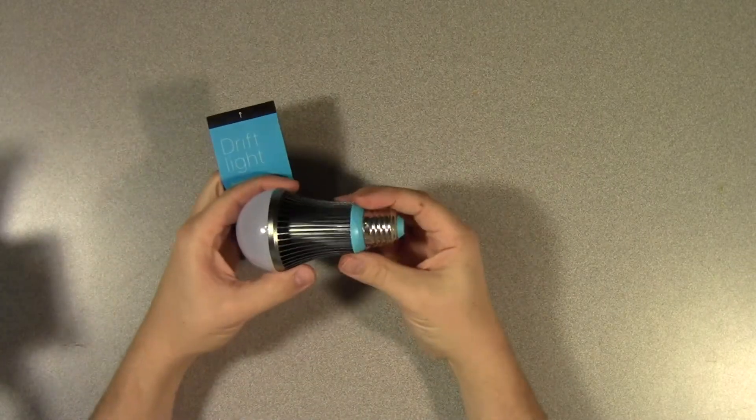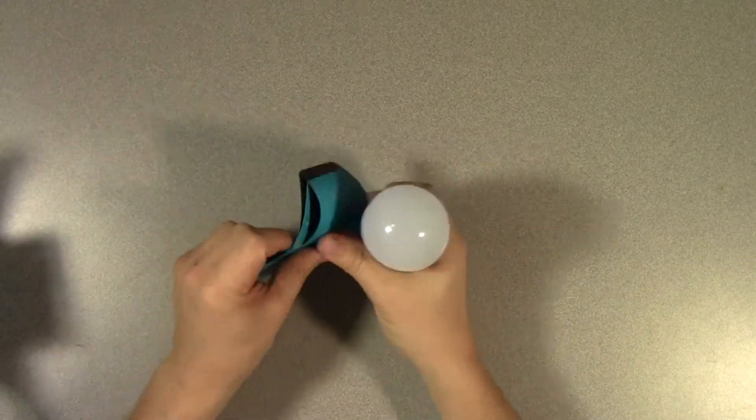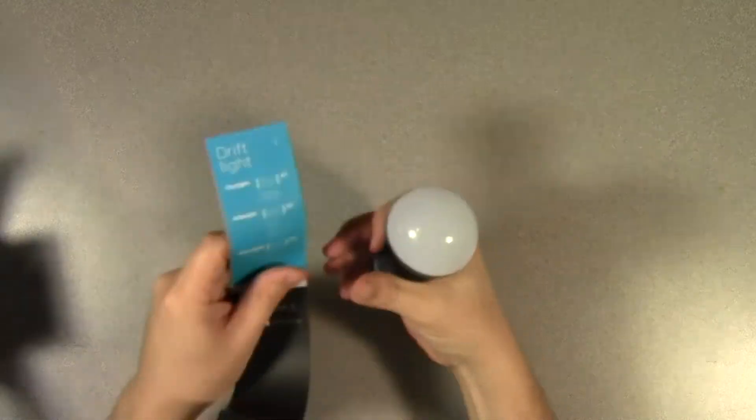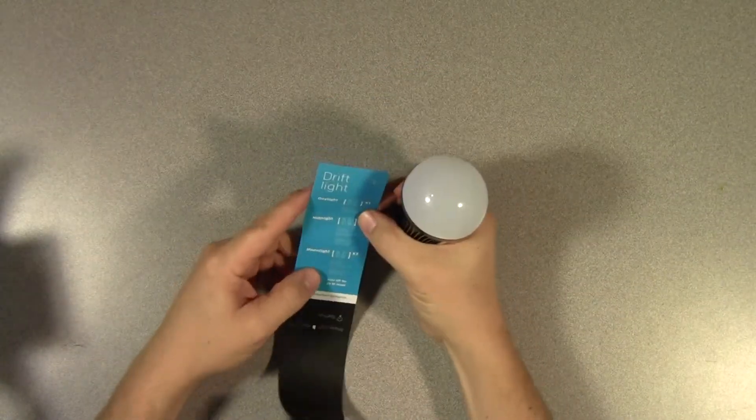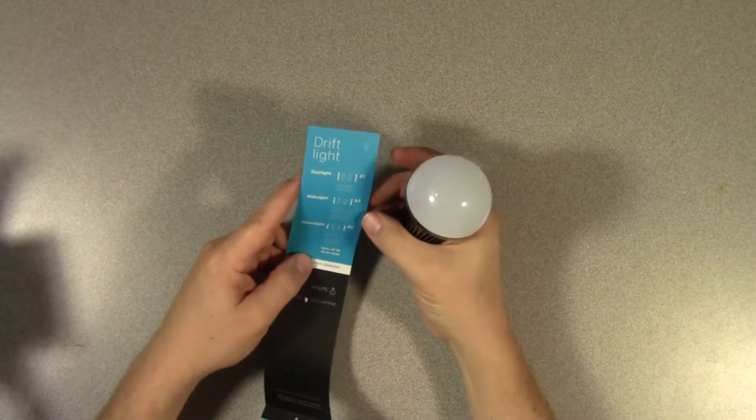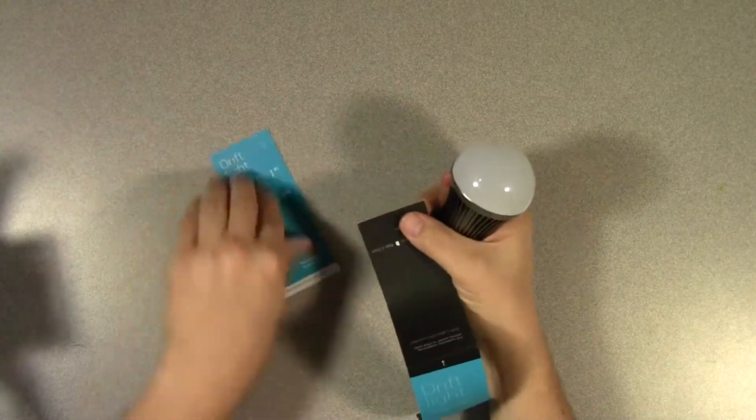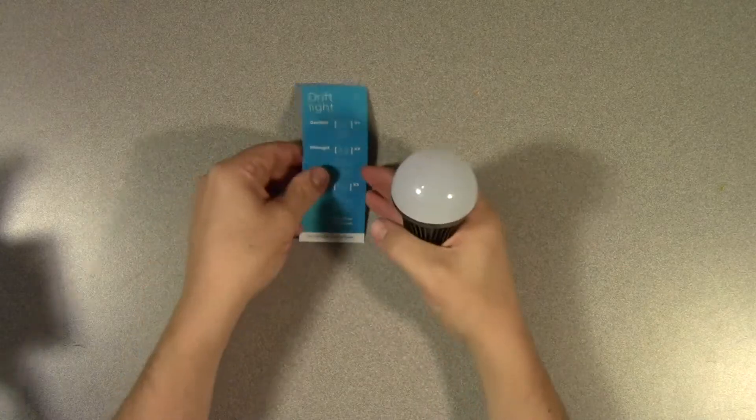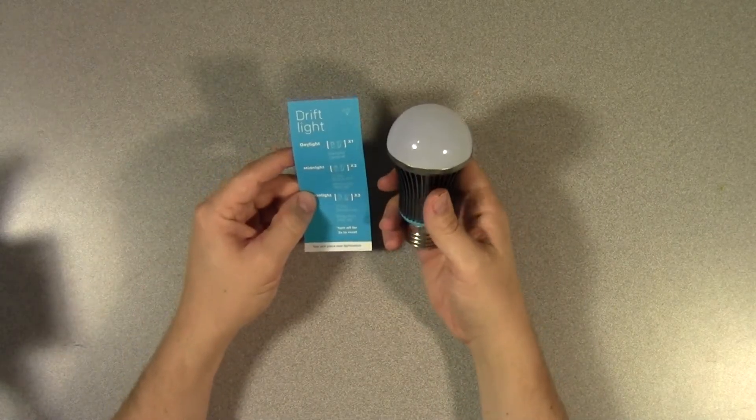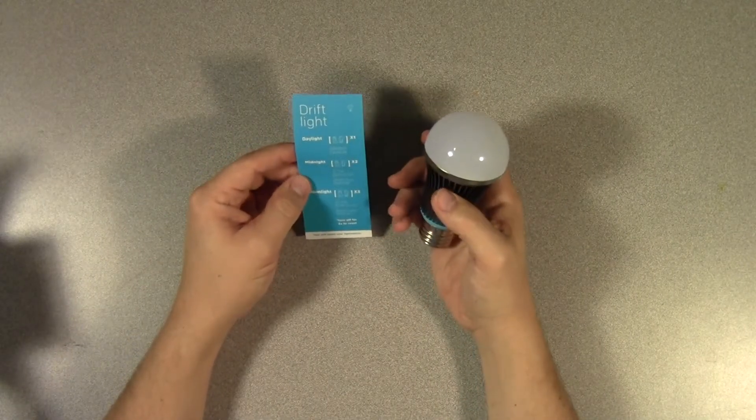So there's basically just two things in the box. We have the bulb itself and we have a little pamphlet here, actually just a little card that tells you what you can do with it. You can actually tear this off and use it near the light fixture or lamp where you have this bulb installed, and that way you can remember how to work it.